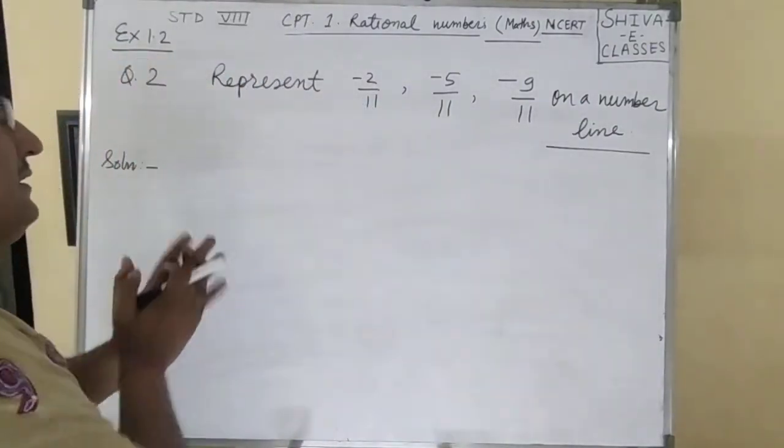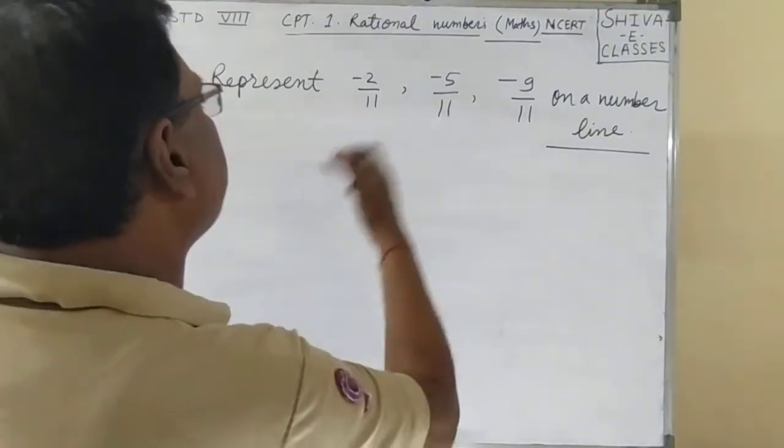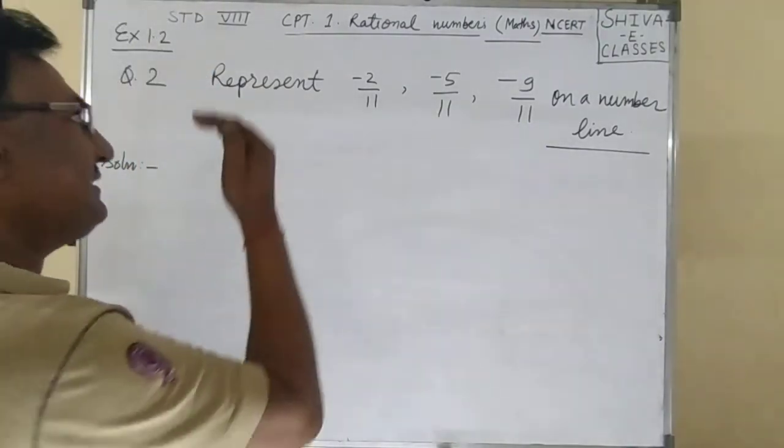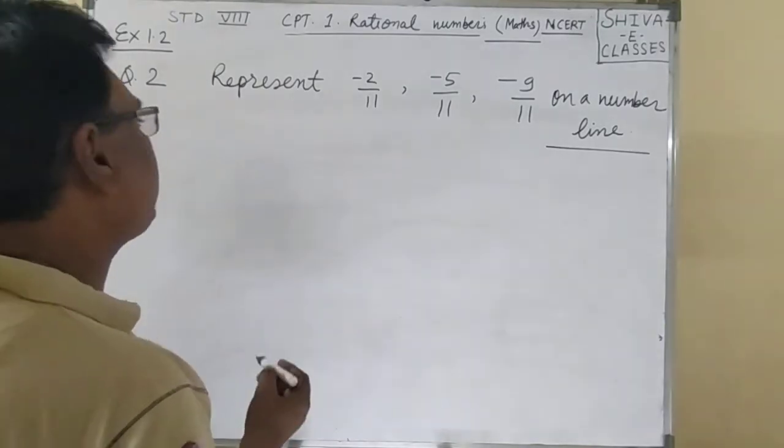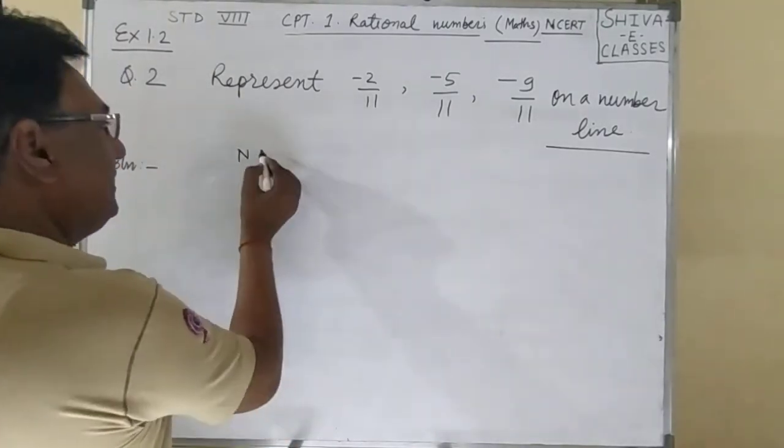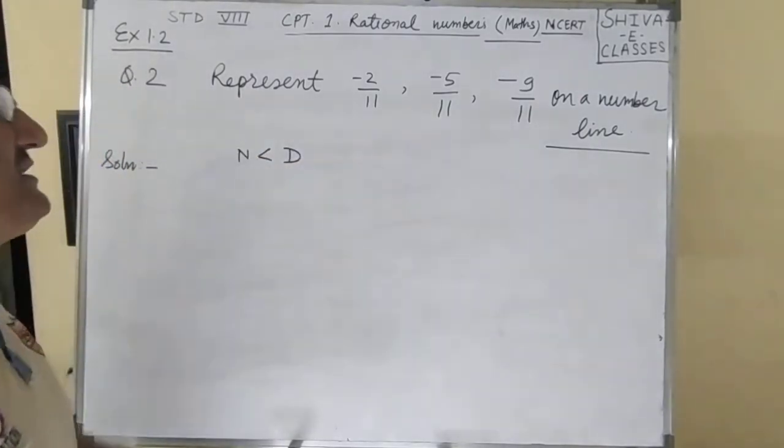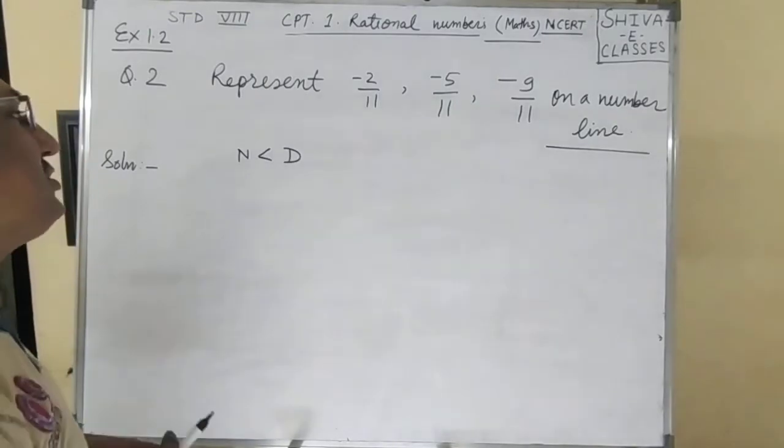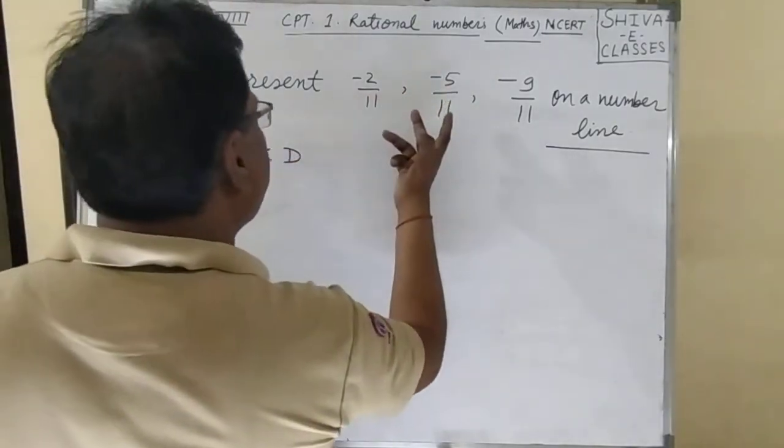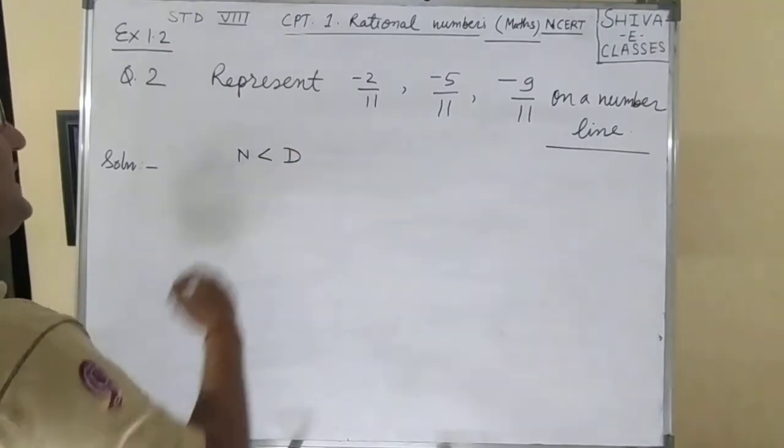So first of all, we observe the numerator and denominator, the relation between numerator and denominator. What we observe? Numerator less than denominator. The sign we ignore, we observe numerator and denominator. Numerator less than denominator.